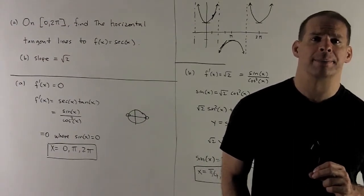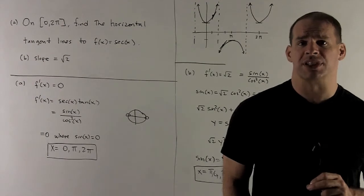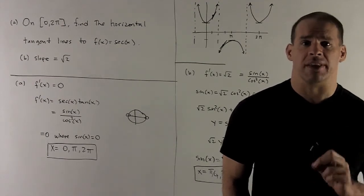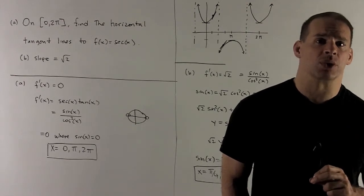On the interval from 0 to 2π, find all horizontal tangent lines to f(x) = sec(x). Once you've done that, find where the slope of the tangent line is equal to √2.